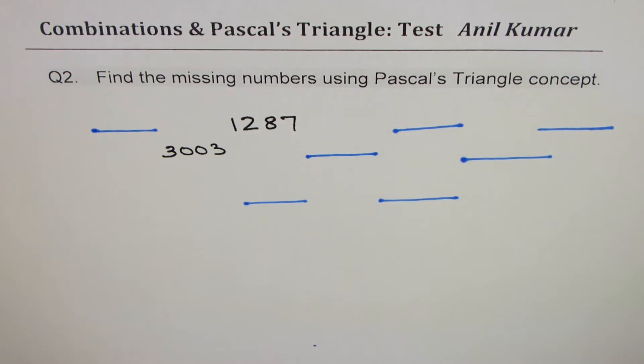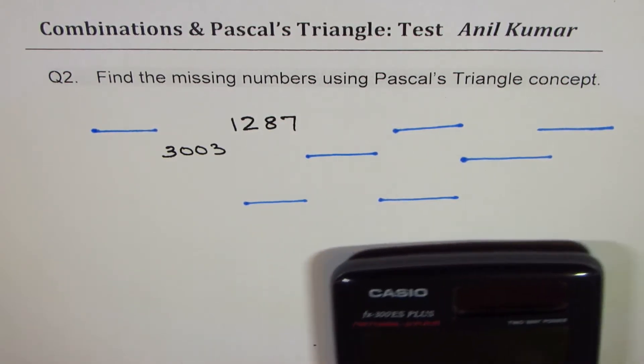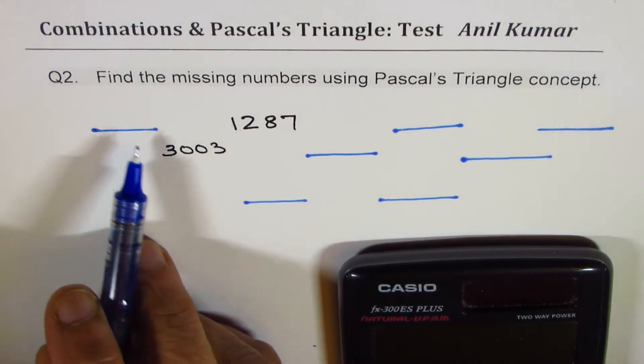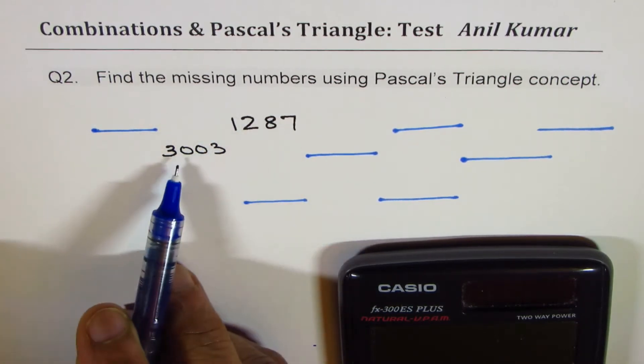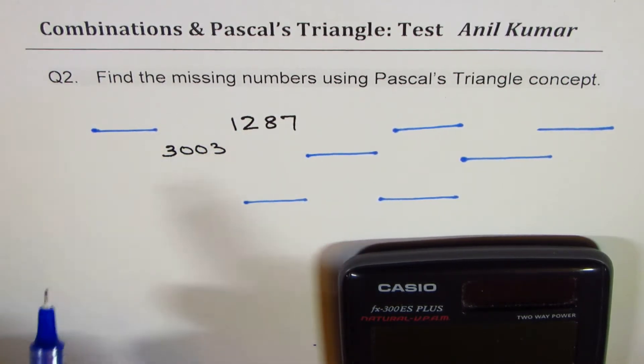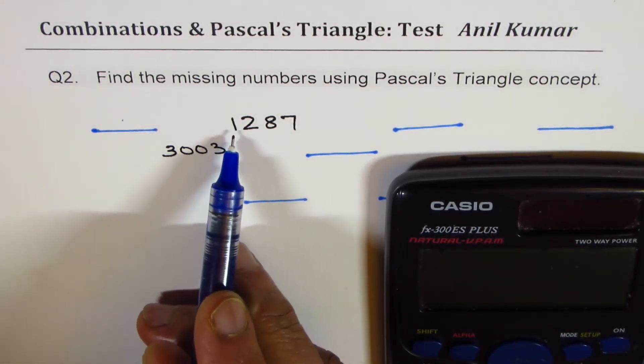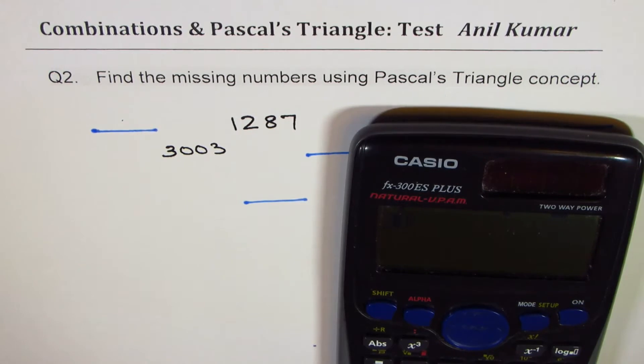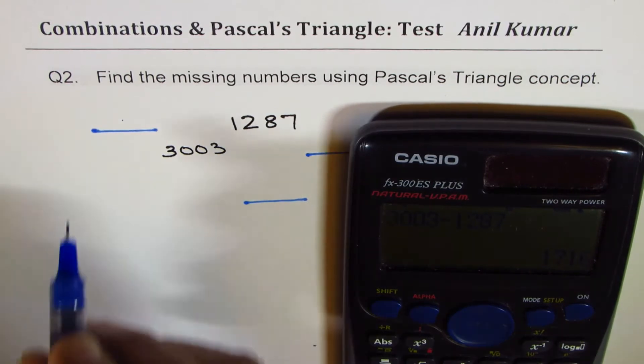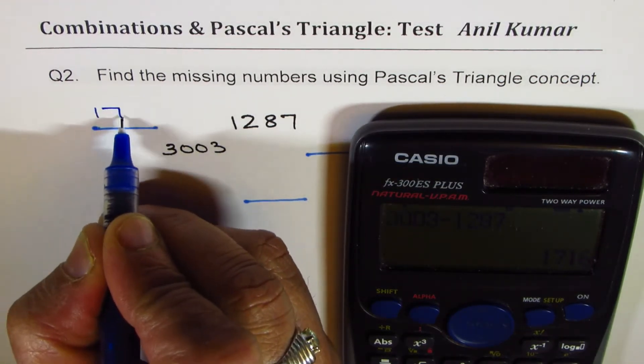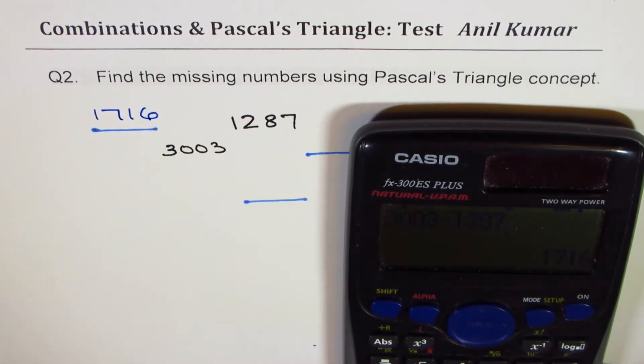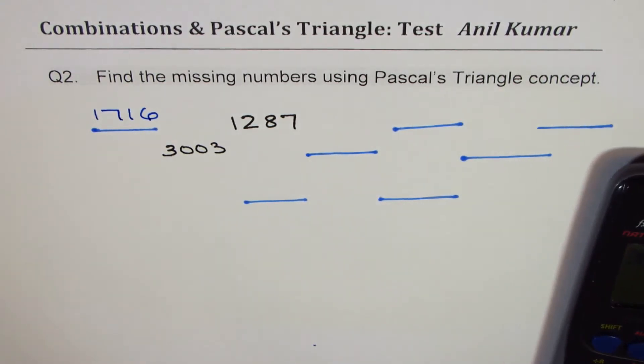Here is my solution. Well first number to get is very simple since combination of these two will give me 3003 so the number here should be 3003 take away 1287. So we do 3003 take away 1287 and we get this number as 1716. So that part has been done.